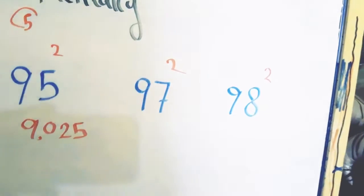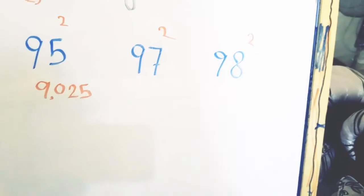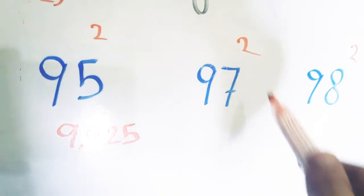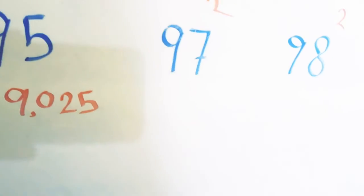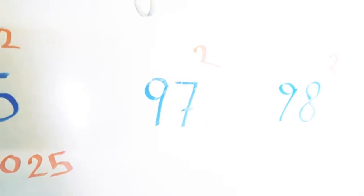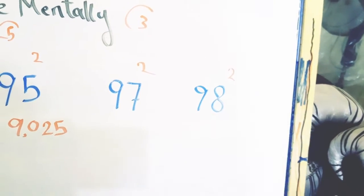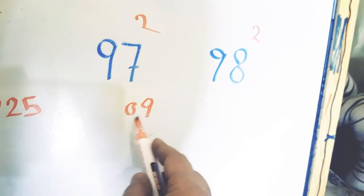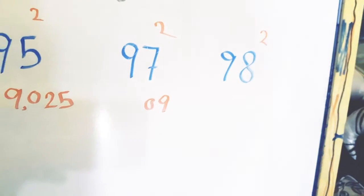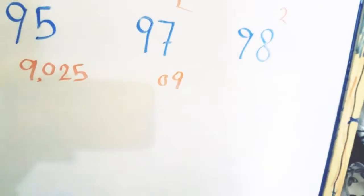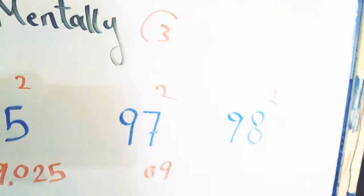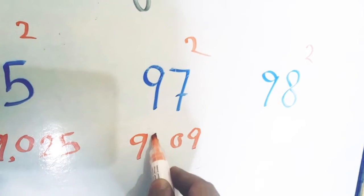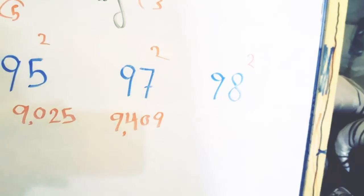Here we want to square 97. Since 97 is located between 90 and 100, we can reach the answer mentally. The first step: we subtract 97 from 100 to get 3. We multiply 3 by 3 to get 9. Since 9 is a single digit, we must add a 0 to the left of this digit to make it 09. Then we subtract 3 from 97 to get 94. So the answer is 9,409.